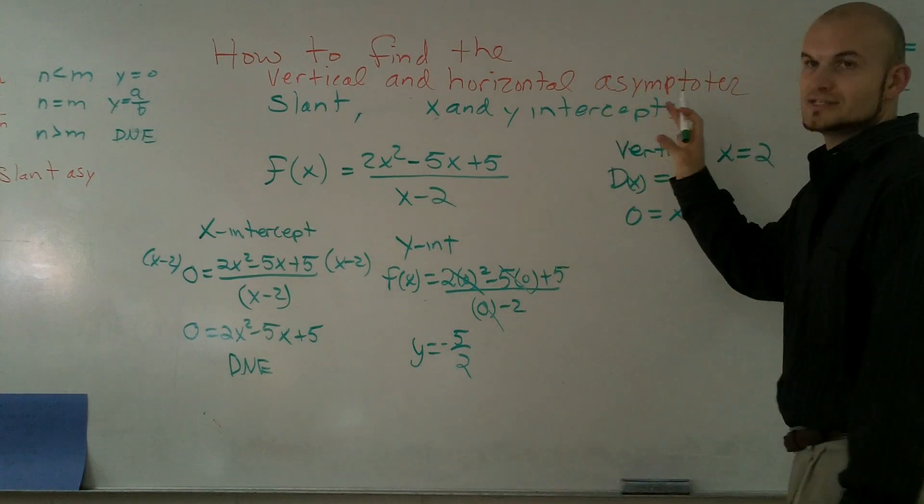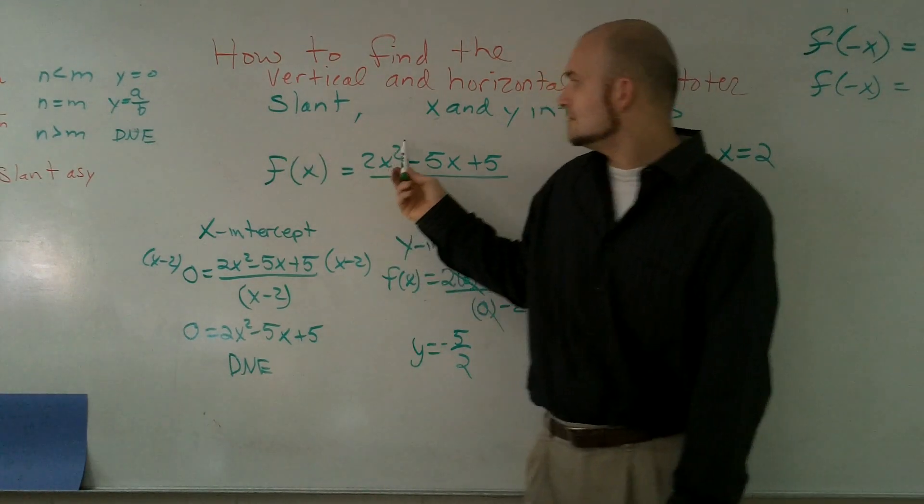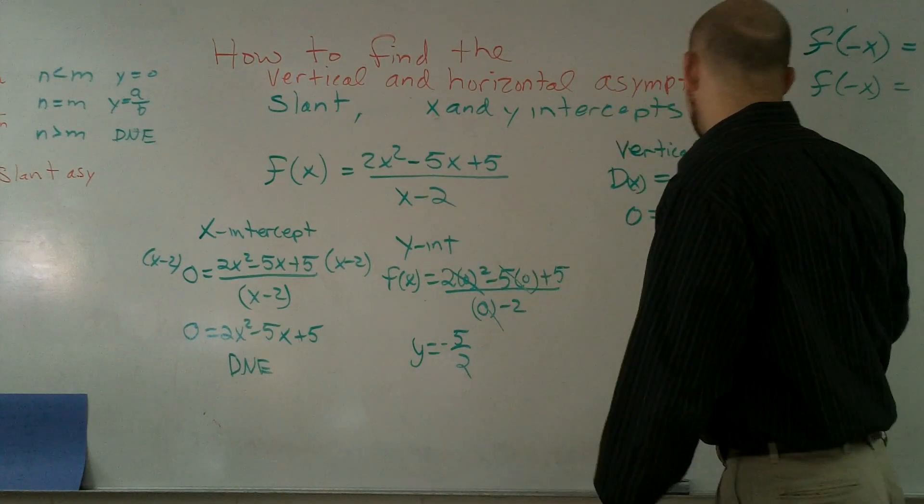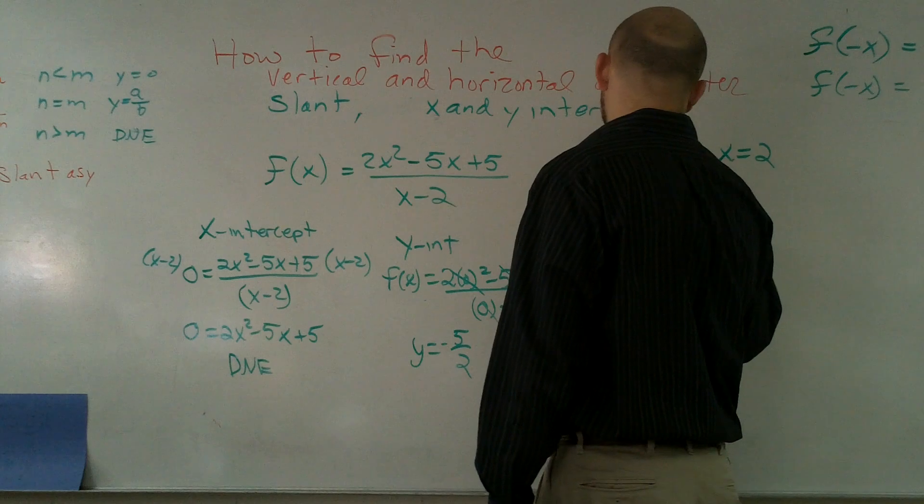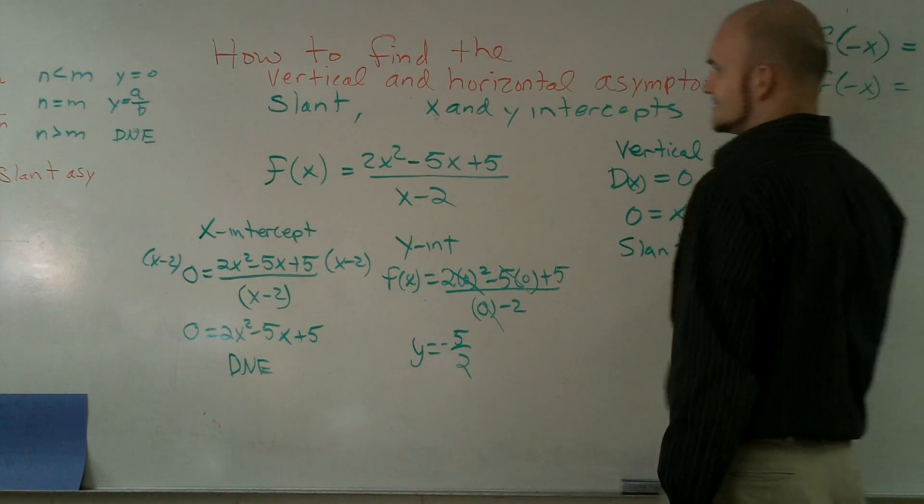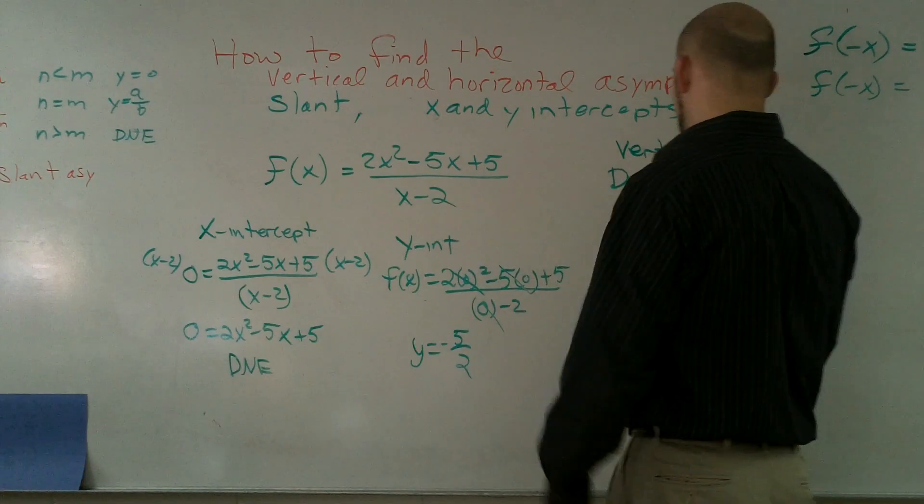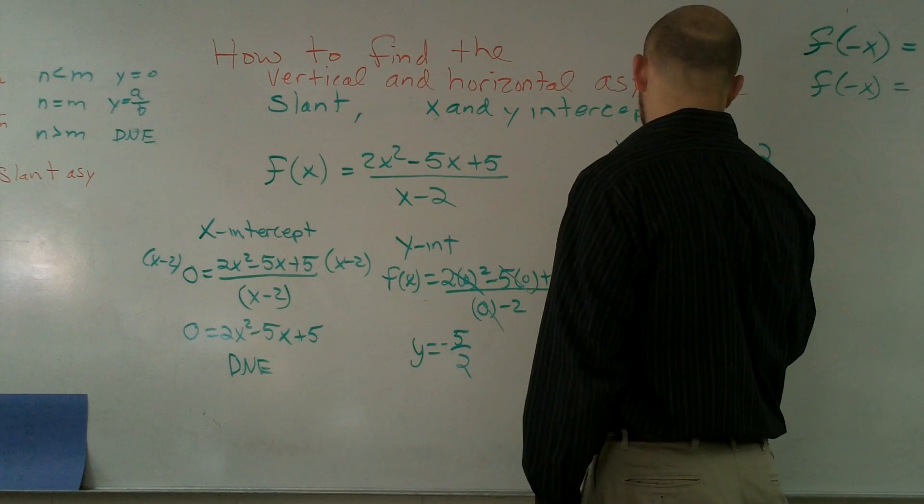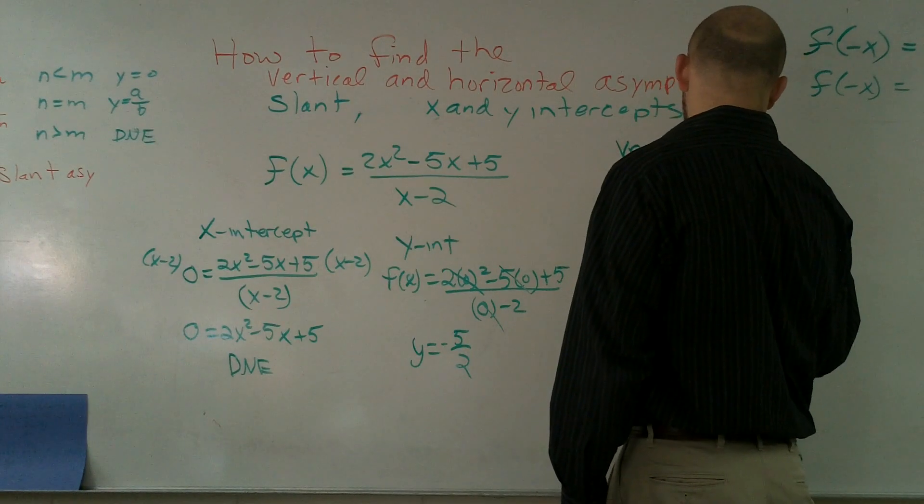Horizontal does not exist because my exponent up here is greater than my exponent down here. However, our slant asymptote is going to be when I divide this. So I'll use synthetic division of 2, negative 5, and 5.